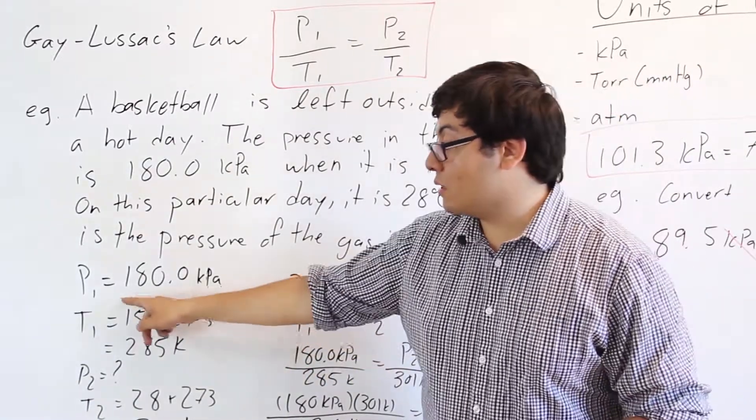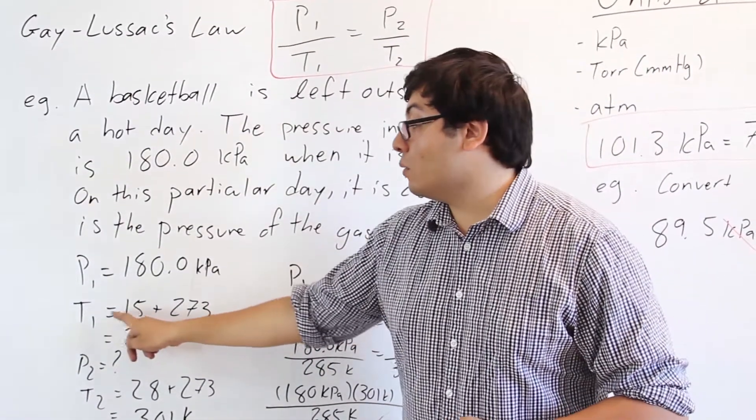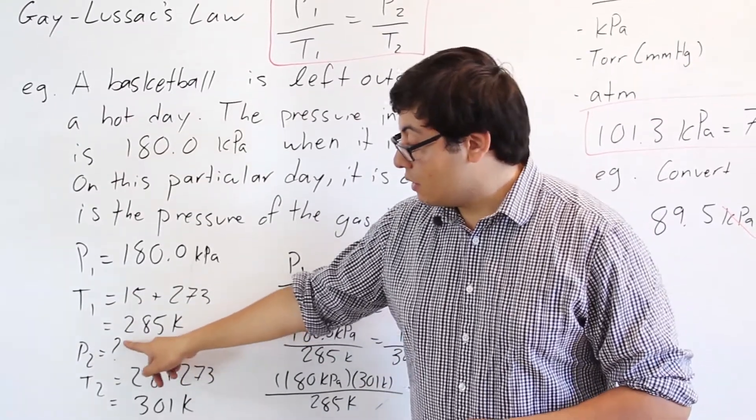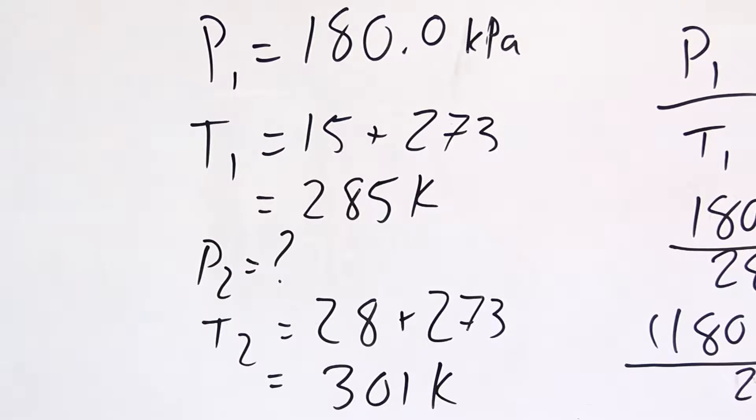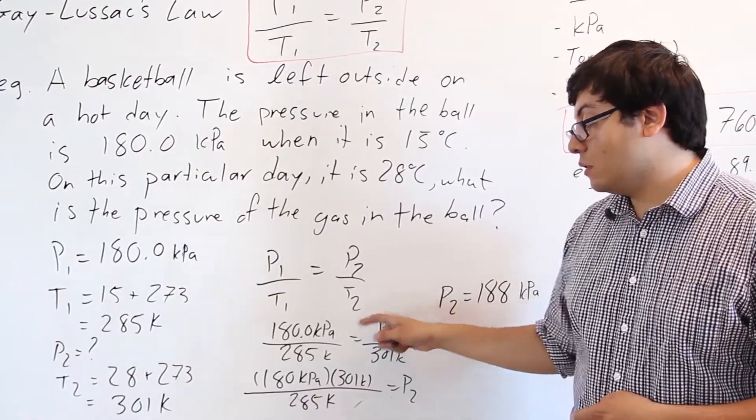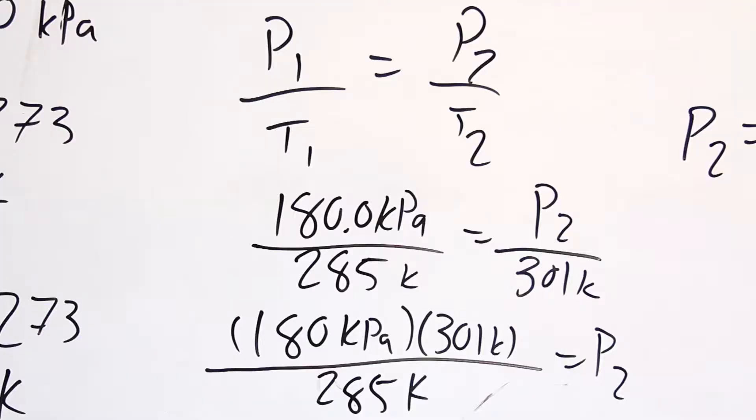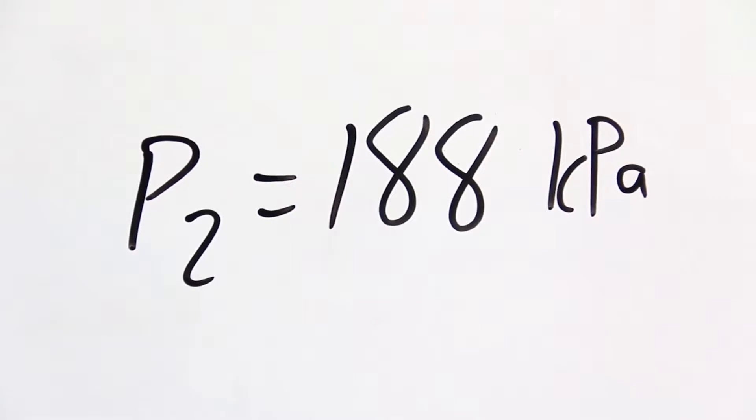So we have P₁ as 180 kilopascals, T₁, again remember it has to be in Kelvin, that's 285 Kelvin. P₂ we're trying to find out, and T₂ is 301 Kelvin. So P₁ over T₁ equals P₂ over T₂. When we work it out, we get P₂ equals 188 kilopascals.